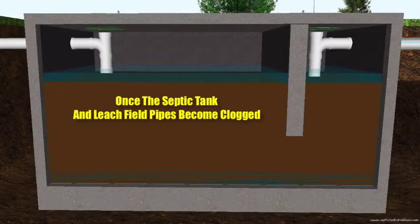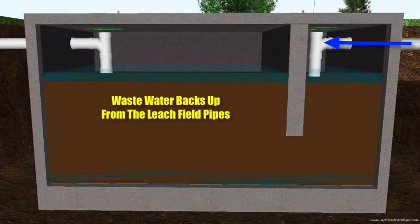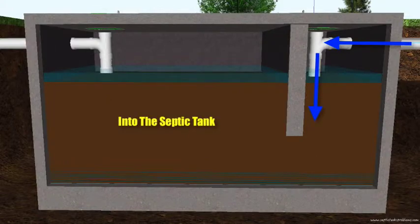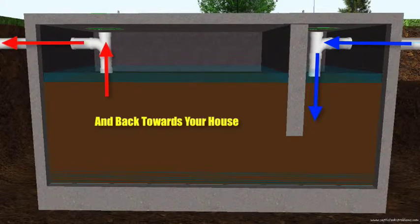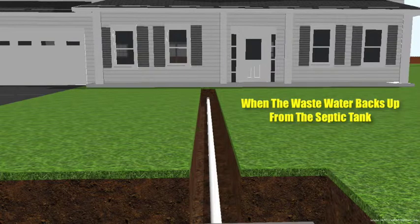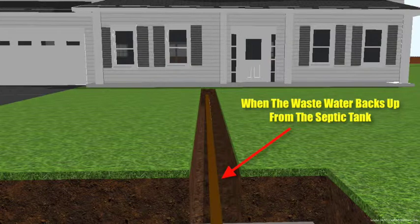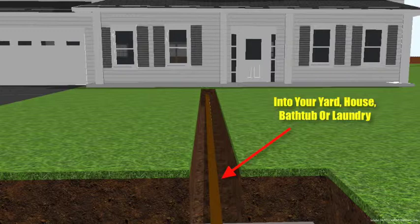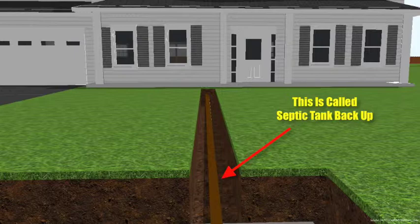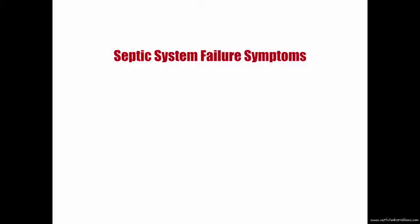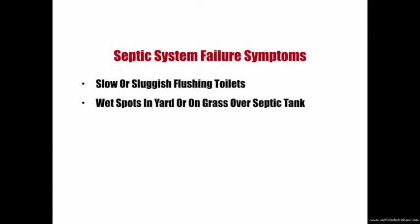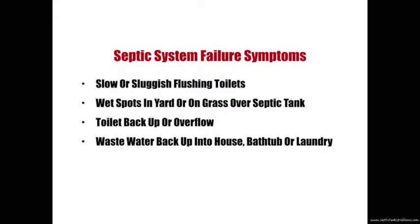So what is septic system failure? Once the drain field pipes become clogged with sludge, the wastewater backs up through the pipes into the septic tank, and from the septic tank it backs up toward your house — into the kitchen, the yard, the bathtub, or laundry. This is called septic system failure. Symptoms include slow or sluggish flushing toilets, wet spots in the yard over the septic tank, toilet backup or overflow, and wastewater backing up into the house.